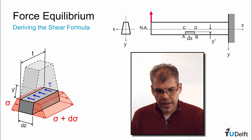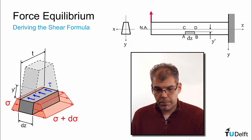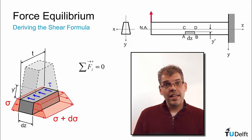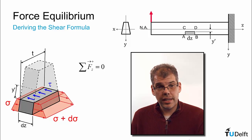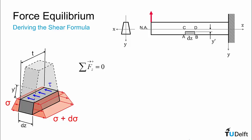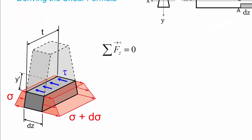With our assumptions made, we can now look at the horizontal equilibrium. So if we look at the sum of the forces in the axis of the beam, or the z direction, they must equal zero on our element. So let's look at the resultants of our three different stress distributions.